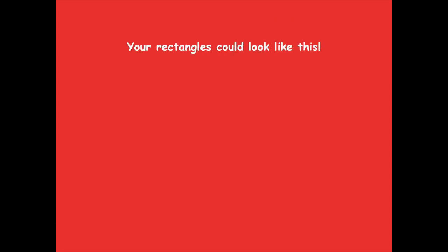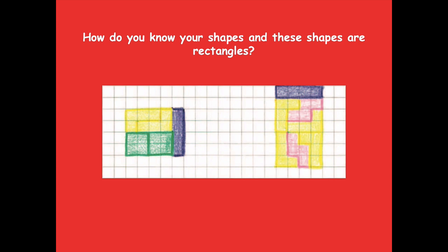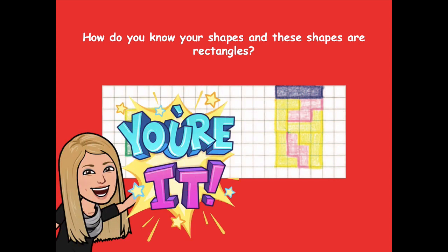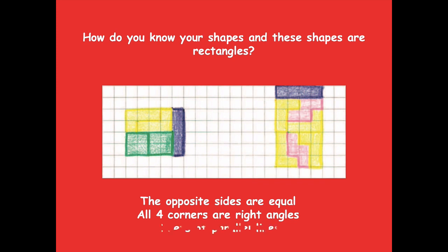Your rectangles could look like this. Do they have to look exactly like that? No — your rectangles might look different and that's okay. How do you know your shapes are rectangles? Think about what it means to be a rectangle. Remember: the opposite sides are equal, all four corners are right angles, and they have two sets of parallel lines. Those are the attributes you need to be a rectangle.